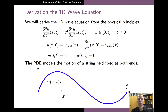In the model, the function u denotes the vertical displacement of the string at the spatial coordinate x and at time t, as shown in the figure on the slide. In the PDE, the quantity c is called the wave speed, and it depends on the density and the tension of the string. We will see in a later lecture that this quantity really describes the speed of propagation of waves in the string.